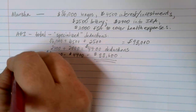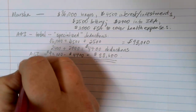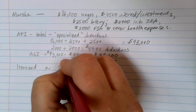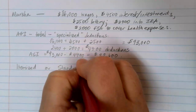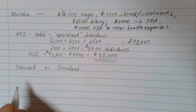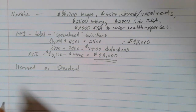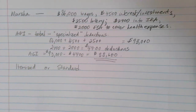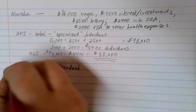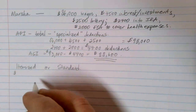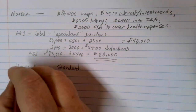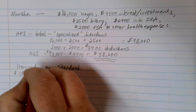The next thing we need to do is look at and consider itemized deductions versus the standard deduction. If Marsha went through and calculated all of her itemized deductions — from mortgage interest, charitable donations made throughout the year, a variety of sales tax purchases, and things along that line — Marsha ended up with an itemized total of $18,570.